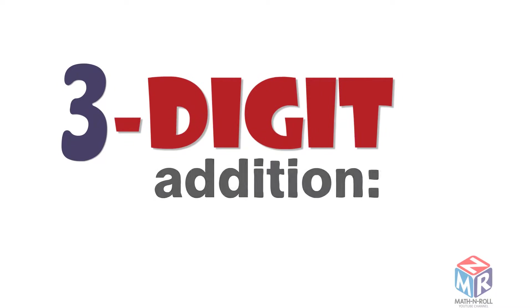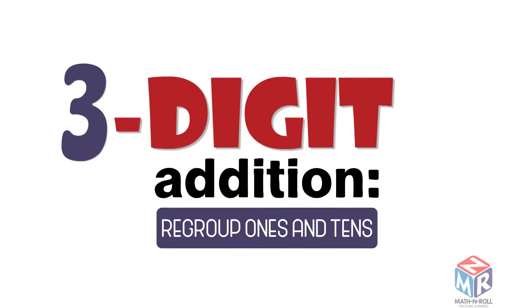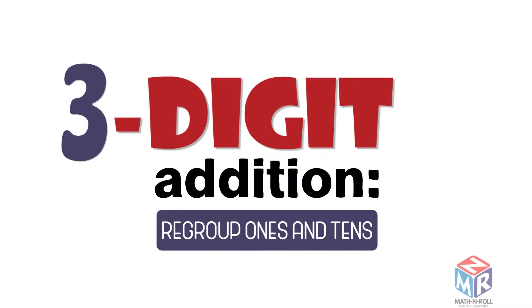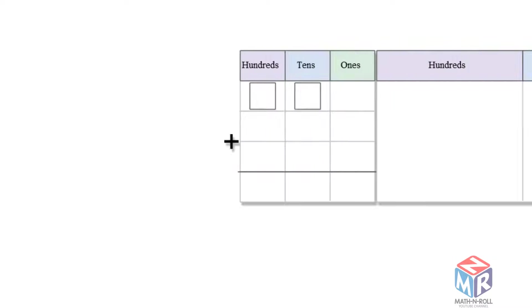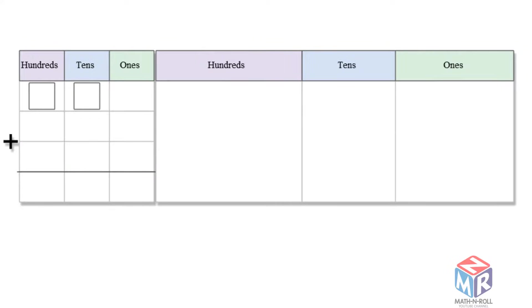Three-digit addition, regrouping ones and tens. Let's try an example: 256 plus 178.